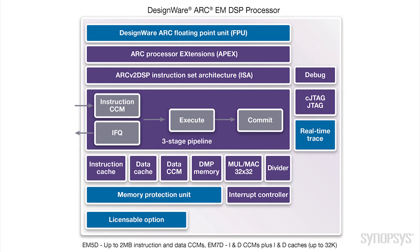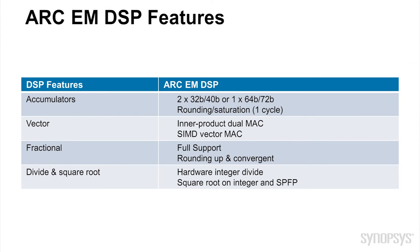The Arc-EM5D and 7D processors, which are available now, feature a separate parallel DSP pipeline with a unified 32x32 multiply and MAC unit, support for fixed-point DSP, vector and SIMD operations. To deliver enhanced performance for filtering, FFT, and other signal processing algorithms, they feature fractional support for saturating arithmetic, rounding and non-rounding instructions, as well as divide and square root.